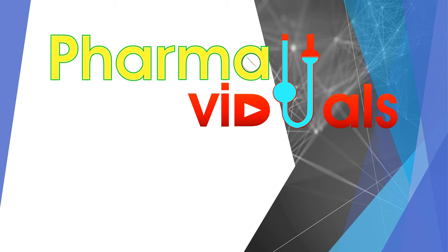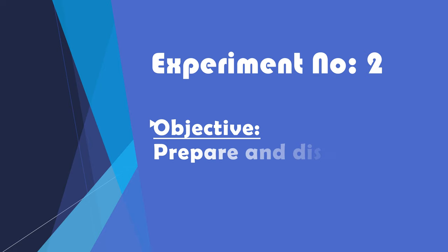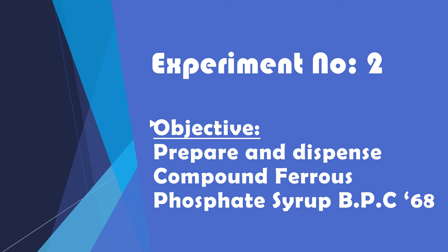In this video, we brought to you the virtual practical manual for Pharmaceutics 1. Experiment No. 2. The objective of this practical is to prepare and dispense compound ferrous phosphate syrup BPC-1968.